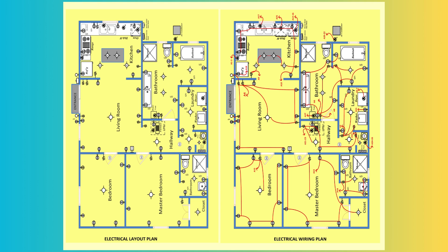The electrical wiring plan in the right panel demonstrates the wiring connections between electrical components. Key features include red lines indicating the paths of electrical wiring connecting outlets, switches, and fixtures, and labels for circuit numbers or identifiers for different circuits and breakers. Connections for individual rooms are grouped logically to ensure safe and efficient wiring. Specialized circuits for appliances like the stove, oven, and washer/dryer are clearly marked. Switching operations for light fixtures are highlighted, showing which switches control which lights. Together, the layout plan and wiring plan provide a complete electrical blueprint for installation and troubleshooting.